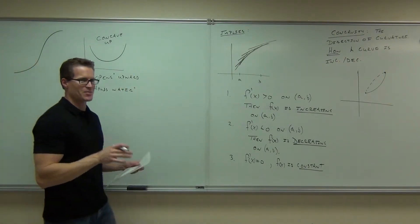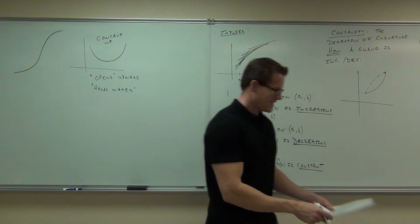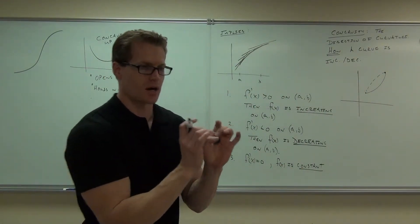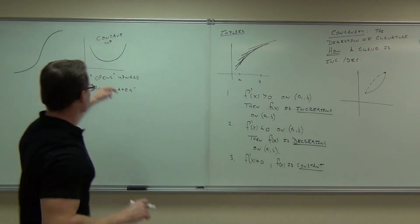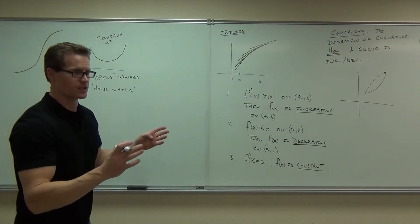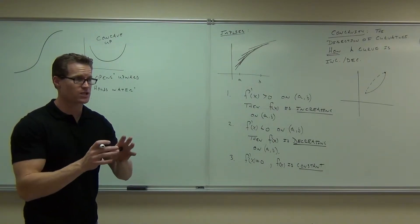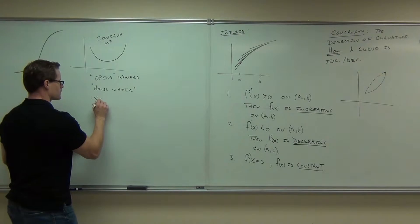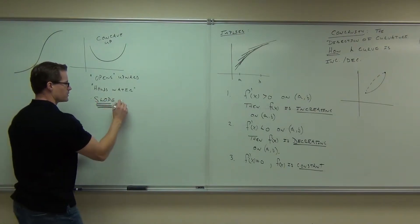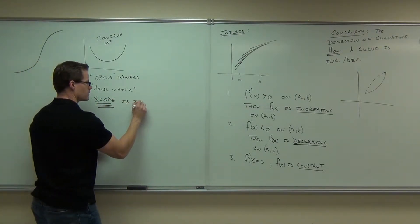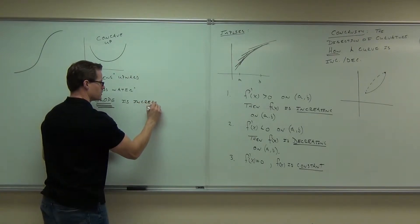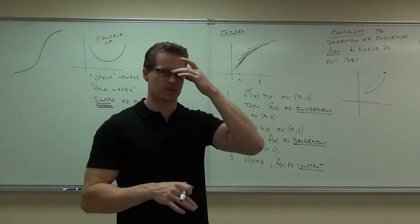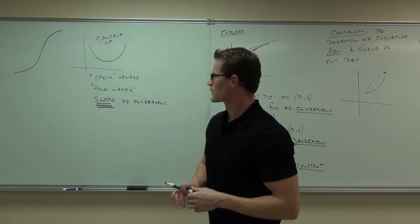Here's what it actually means in mathematics: if you're concave up, it means your slope is increasing. The function is not necessarily increasing — this is actually decreasing — but the slope is increasing. Do you see the distinction between increasing and concavity? The slope is increasing on that interval. That's what concave up means.